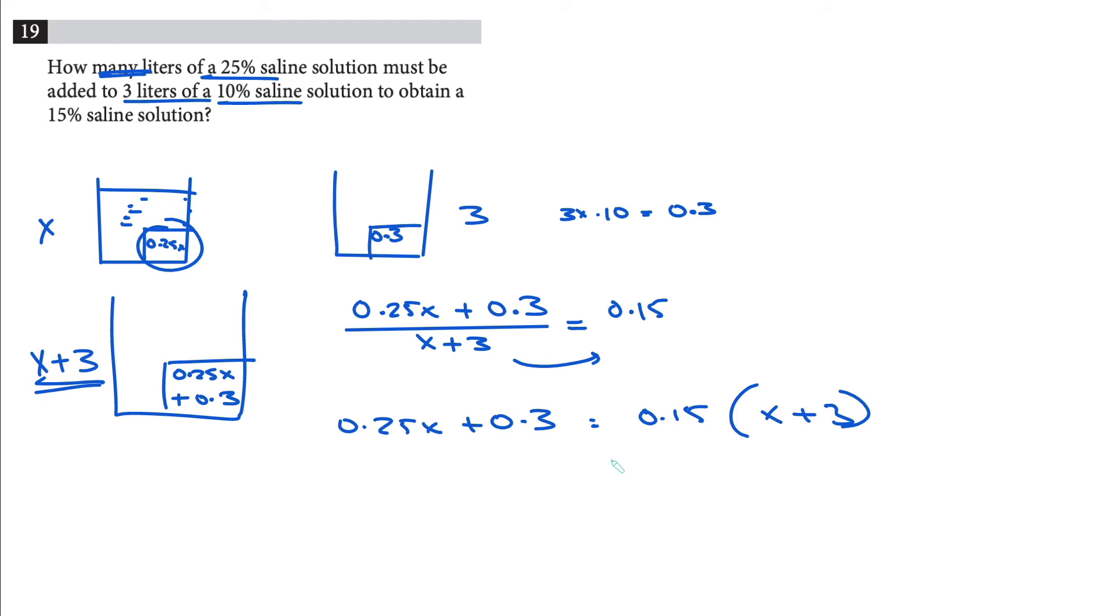Right, you just distribute this. You're gonna get 0.15x plus 0.45 because you're multiplying this and this, right? And then you're gonna have 0.25x plus 0.3 here. Now you move this to the other side, in other words you subtract 0.15x from both sides.